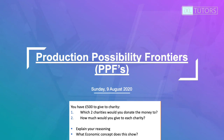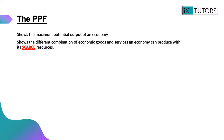Hi everyone, today we're going to have a look at production possibility frontiers, also known as PPFs. To start you off, there are a couple of questions at the bottom. While you're answering those, make sure that you explain your reasoning and think about the economic concept it shows. You've got 500 pounds to give to charity — which two charities would you donate the money to and how are you going to split the money? Pause the video for a couple of minutes to answer those questions.